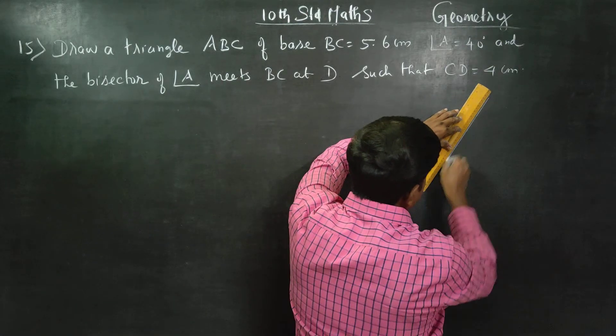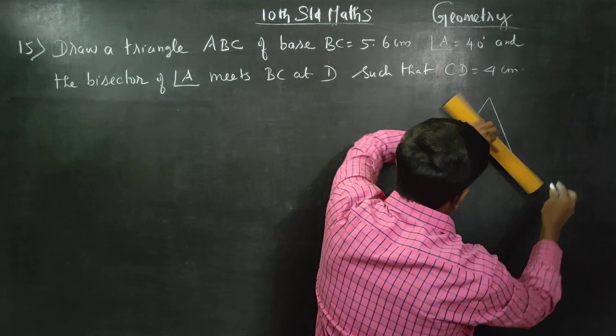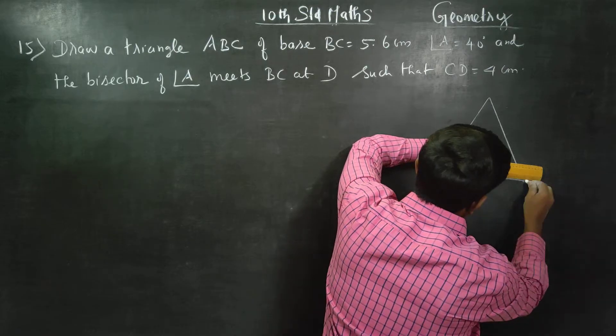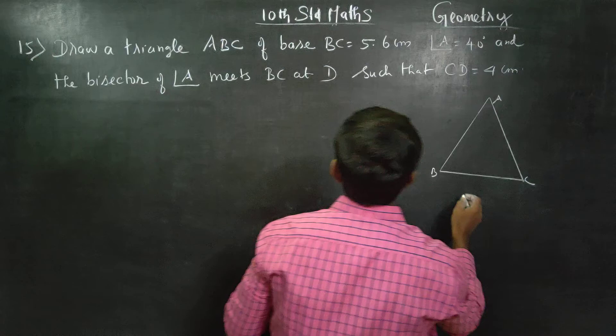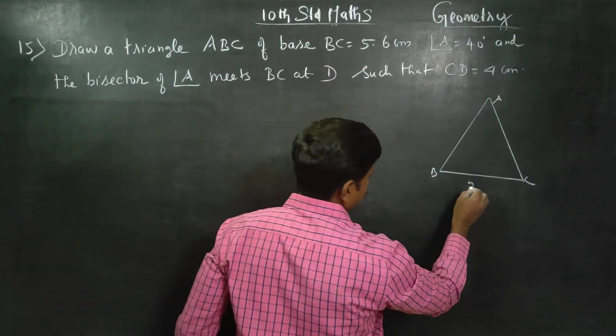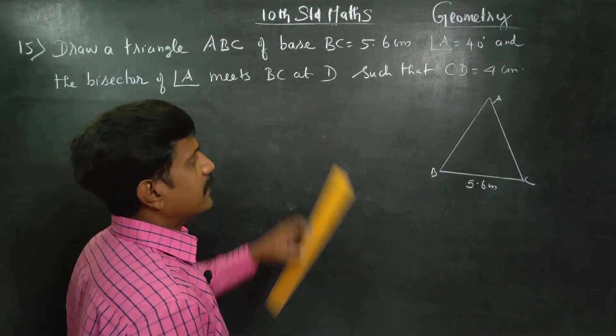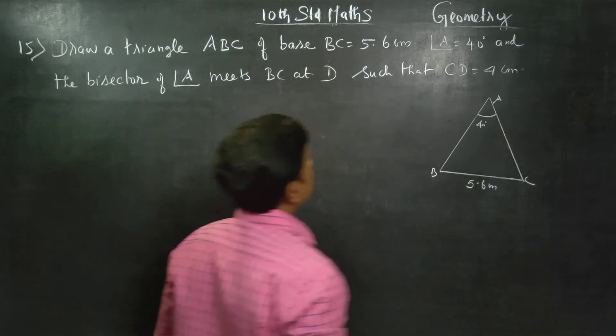First we'll draw a rough diagram. Draw the triangle with any measurement, there is no restrictions for this. Mark points A, B, C. Take the base as BC. BC is 5.6 cm. Angle A is 40 degree.